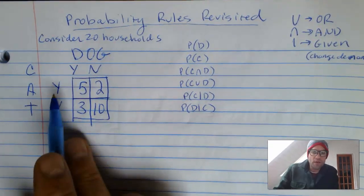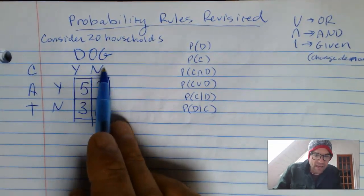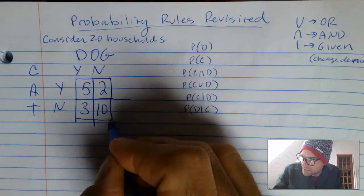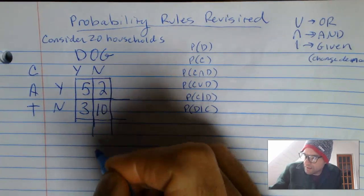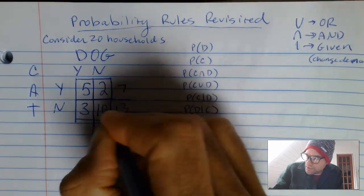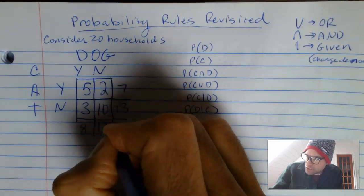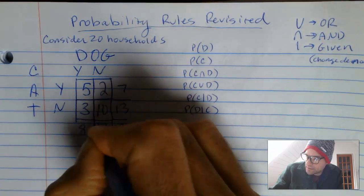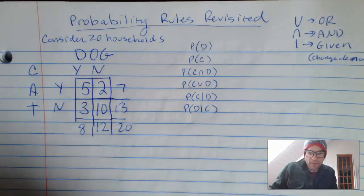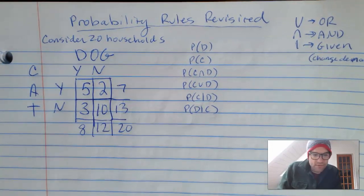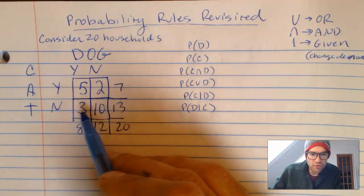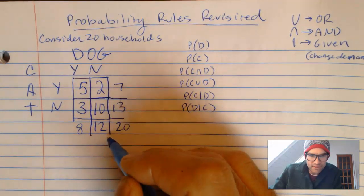So here we have 20 households — yes or no for dog, yes or no for cat. Let's put the totals in, because you always want to put the totals. So 5 and 2 is 7, 13; 5 and 3 is 8, 12. These two add to 20, these guys add to 20 — we're all set. You want to check that these add up across and also down to 20.